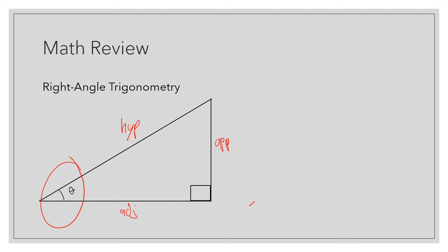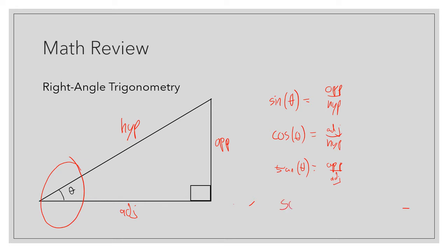Now we can create some trigonometric ratios. Sine of theta is equal to opposite over hypotenuse. Cosine of theta is equal to adjacent over hypotenuse. And tangent of theta is equal to opposite over adjacent. This can be remembered using the acronym SOH-CAH-TOA: SOH means opposite over hypotenuse, CAH means adjacent over hypotenuse, TOA means opposite over adjacent.